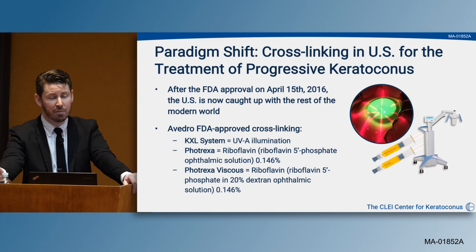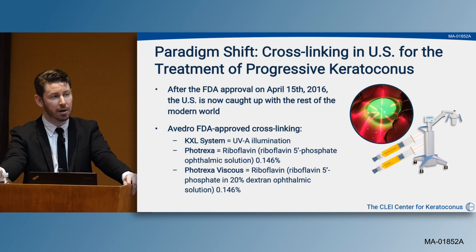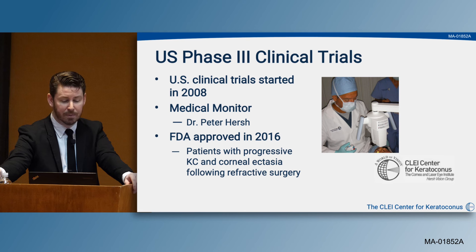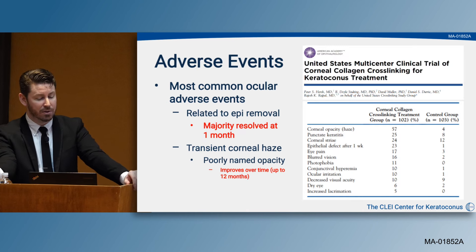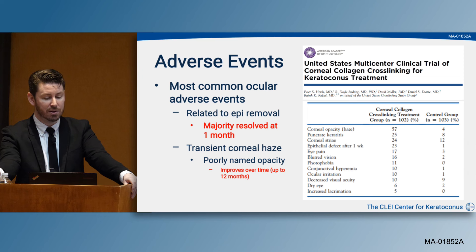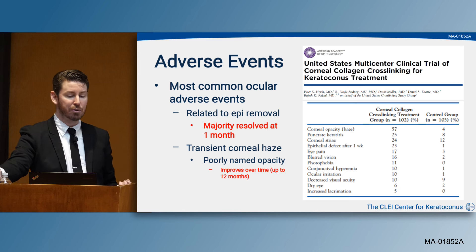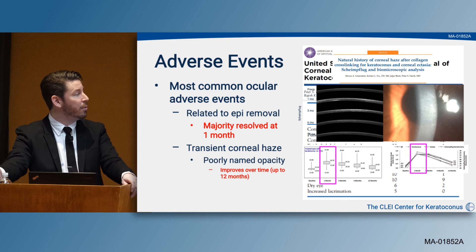There's been a paradigm shift in how we manage keratoconus in the United States. As of 2016, we now have an FDA-approved device and drug for the cross-linking procedure. Phase three clinical trials started in 2008; the medical monitor was Dr. Peter Hirsch, and FDA approval came in 2016 for patients with progressive keratoconus and corneal ectasia following refractive surgery. The most common adverse events were related to epithelial removal, most of which resolved within the first month. There was also transient corneal haze, which resolves over time — up to about the 12-month mark — returning to about baseline.